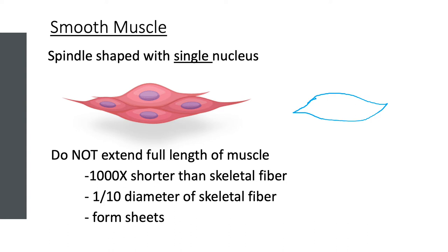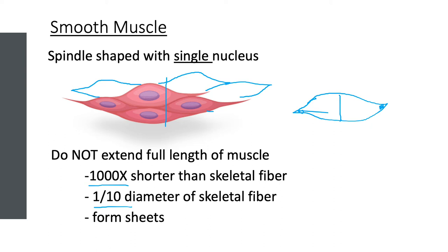Smooth muscle cells tend to form sheets — usually about two to three sheets. Their characteristic tapered ends allow for tighter packing — you can see the way these smoothly fit together and pack tightly to form sheets of smooth muscle.